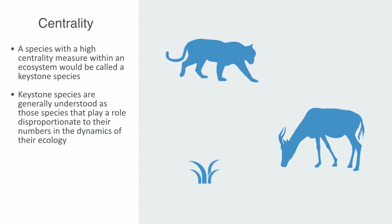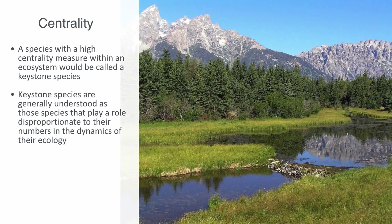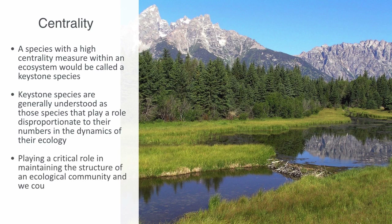Another concrete example of a keystone species would be the beaver. Beavers can engineer whole wetland ecosystems through their capacity to build and maintain dams, which have a major effect on the environment — transforming territory from a stream to a pond or swamp and defining a different set of biotic and abiotic elements and interactions. As such, keystone species play a critical role in maintaining the structure of an ecological community and have a high centrality measure within that network.